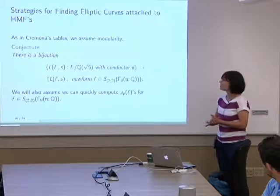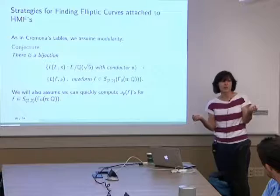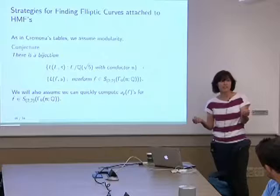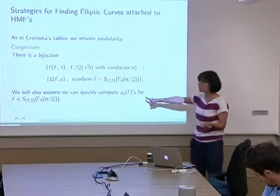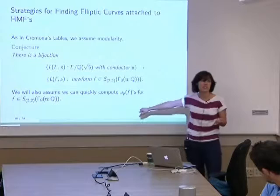Now for the interesting part — actually finding these curves. The strategies: we're going to assume modularity, and we're also going to assume that we can quickly compute the a_p's associated to the Hilbert modular forms. What we consider an elliptic curve attached to a Hilbert modular form is if they have the same L-series — we assume they have the same coefficients. So the a_f's (coefficients for the Hilbert modular form) are the same as the a_E's related to point counts over finite fields.